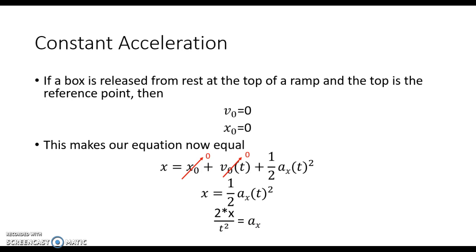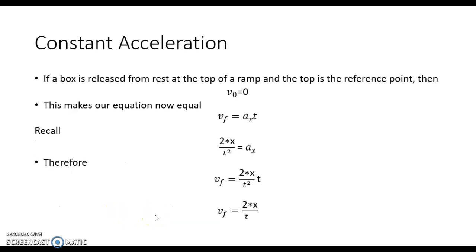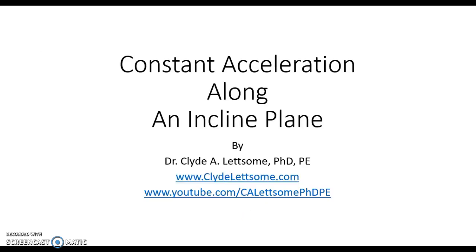If we wanted to find the velocity at our final time, we use v_f equals v_0 plus a_x times t. If the box starts from rest, v_0 equals zero, so v_f equals a_x times t. Substituting our expression for a_x, we get v_f equals 2x divided by t. This was a quick explanation of constant acceleration along an inclined plane. Please subscribe to my YouTube channel and visit my website for more information, and give a thumbs up if you liked this video.